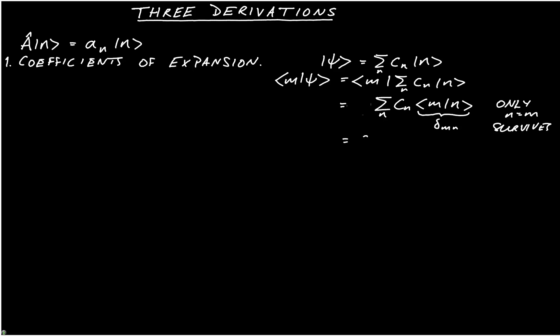That shows us that we are left only with c_m, so we can write that ⟨m|ψ⟩ is equal to c_m. And we now have a formula for calculating the coefficients of the expansion.